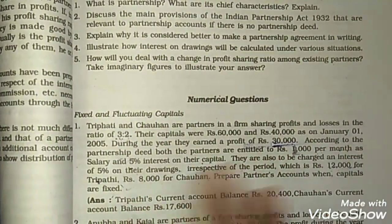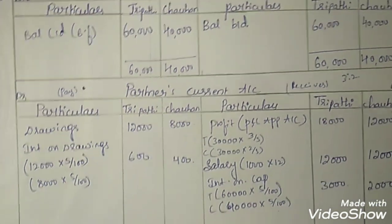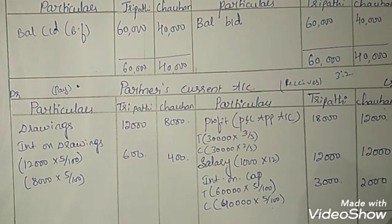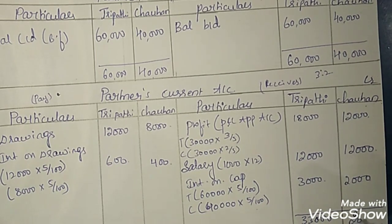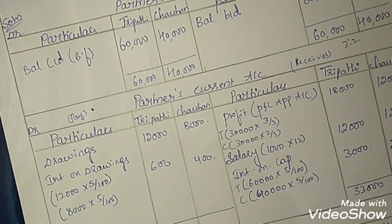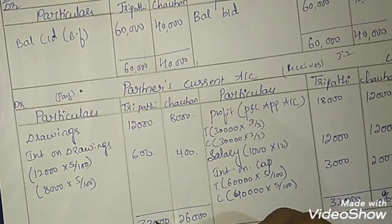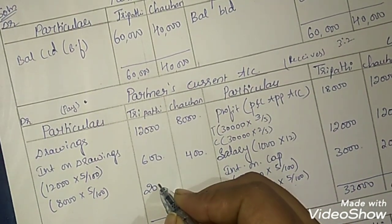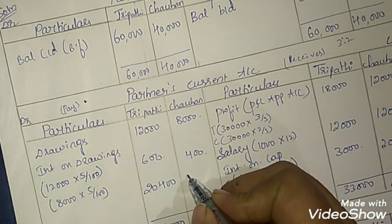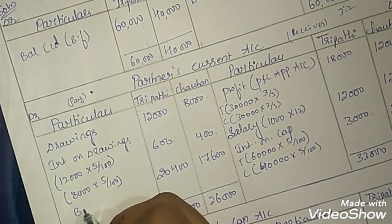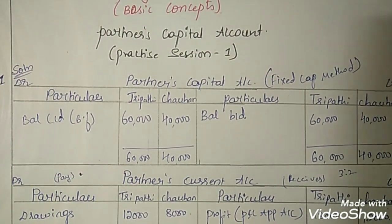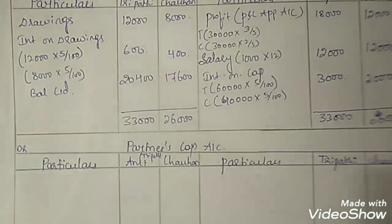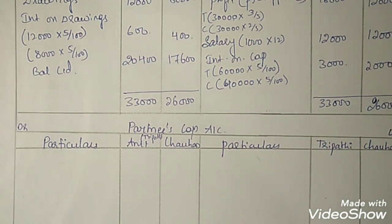Now everything is recorded. Total both amount columns and see which side is bigger — the credit side is bigger. The total for Tripathi is Rs. 33,000 and for Chauhan is Rs. 26,000. Mention the same here: 33,000 and 26,000. The balancing figure — balance carried down — is Rs. 20,400 for Tripathi and Rs. 17,600 for Chauhan. This is how we prepare the partners current account under the fixed method.